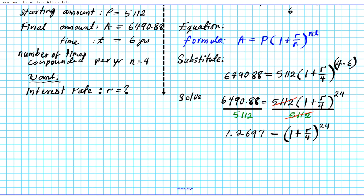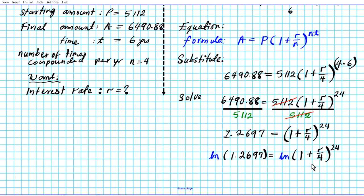Now the next thing we want to do is get rid of that exponent 24. In order to bring it down, we use the logarithmic function. We take the natural logarithm of both sides — you could also use log base 10. One of the properties of logarithms enables you to power down exponents, so we bring the 24 down.